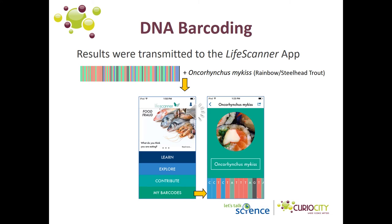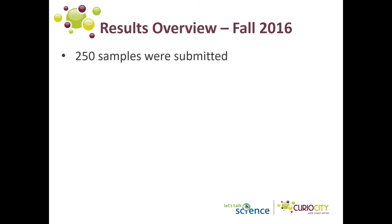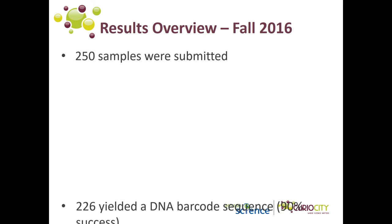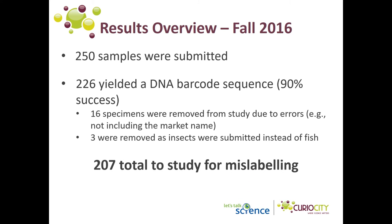Finally, the DNA barcode for each sample was sent back through the Life Scanner app, along with the common name and other information about the fish species. In the fall of 2016, 250 samples were submitted by students in the project. Of the 250 samples submitted, DNA barcodes were obtained for 226. Sixteen samples could not be used because of errors such as missing information, and three were removed because they contained insects instead of fish. This resulted in 207 fish DNA barcodes to study for potential mislabeling.